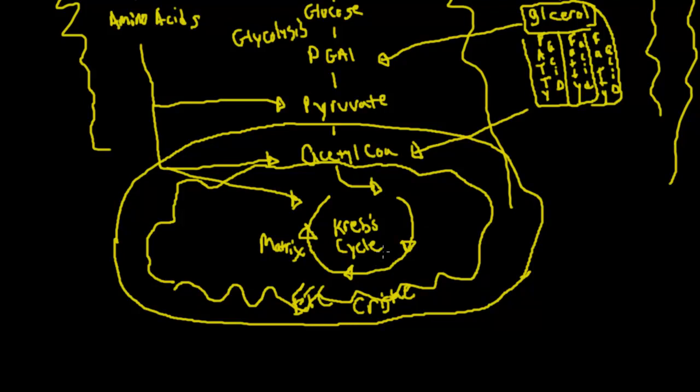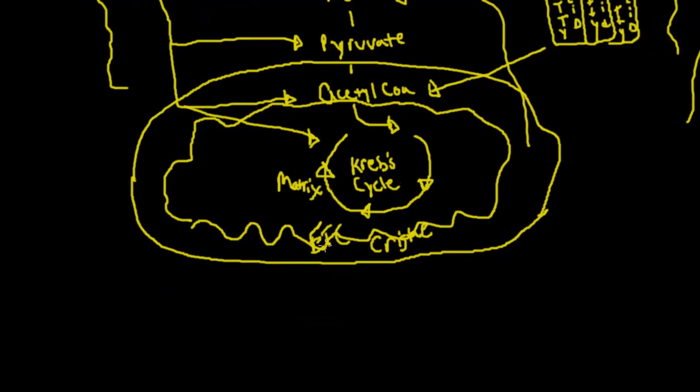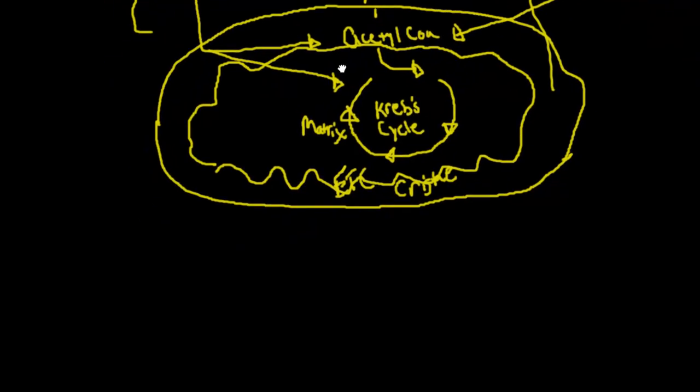Once, if this was aerobic, we would have the energy production happen in the electron transport chain down here in the intermembrane space of the mitochondria. And that is another video.